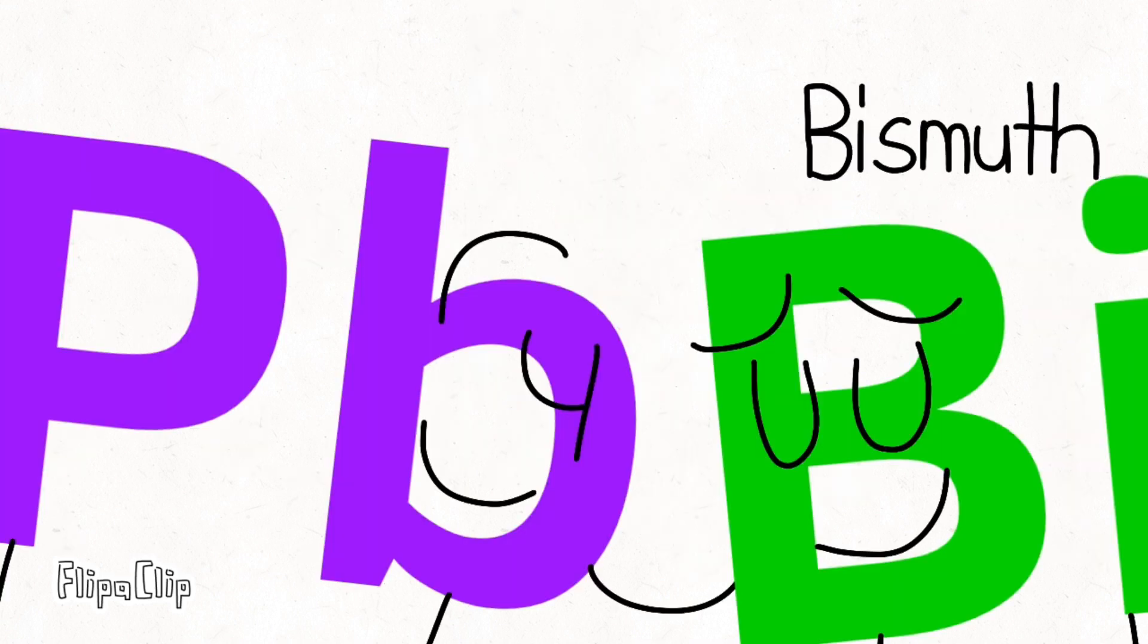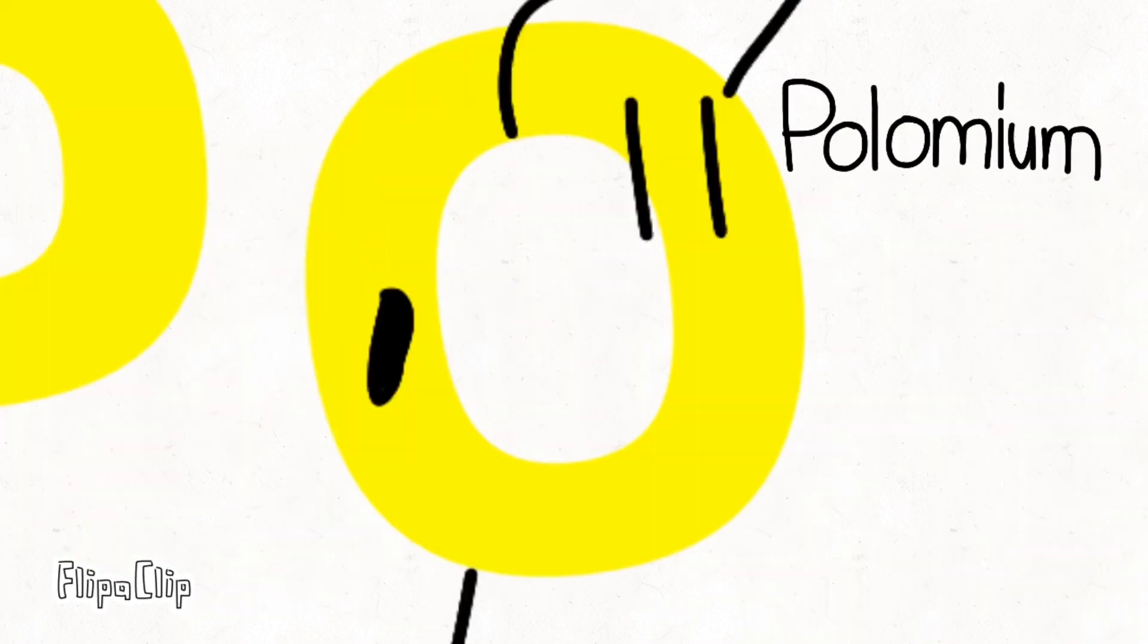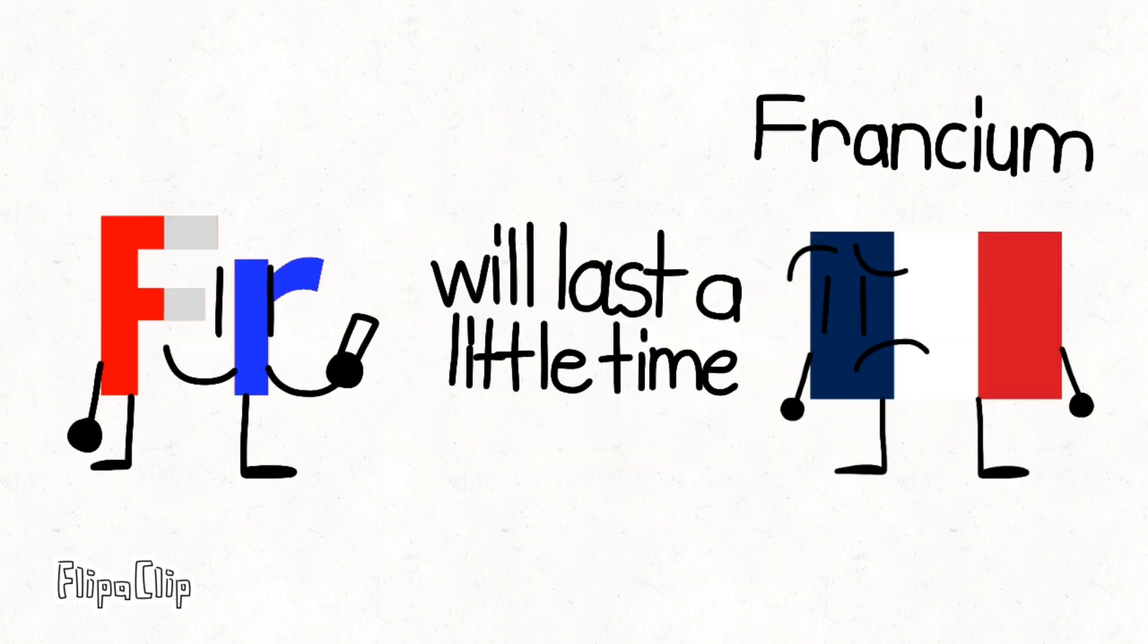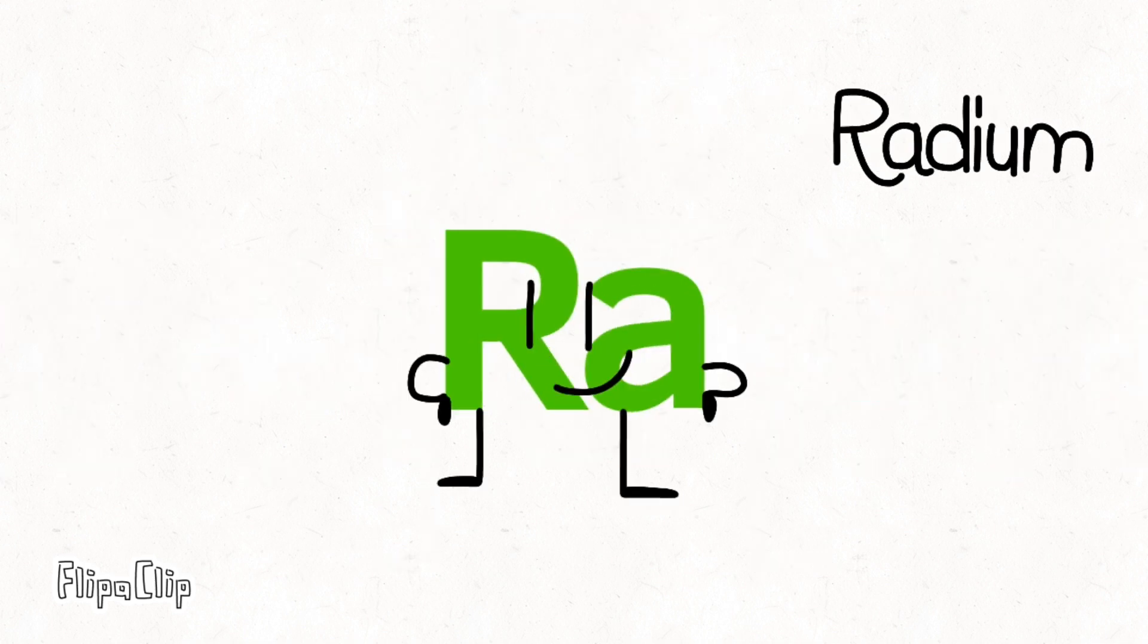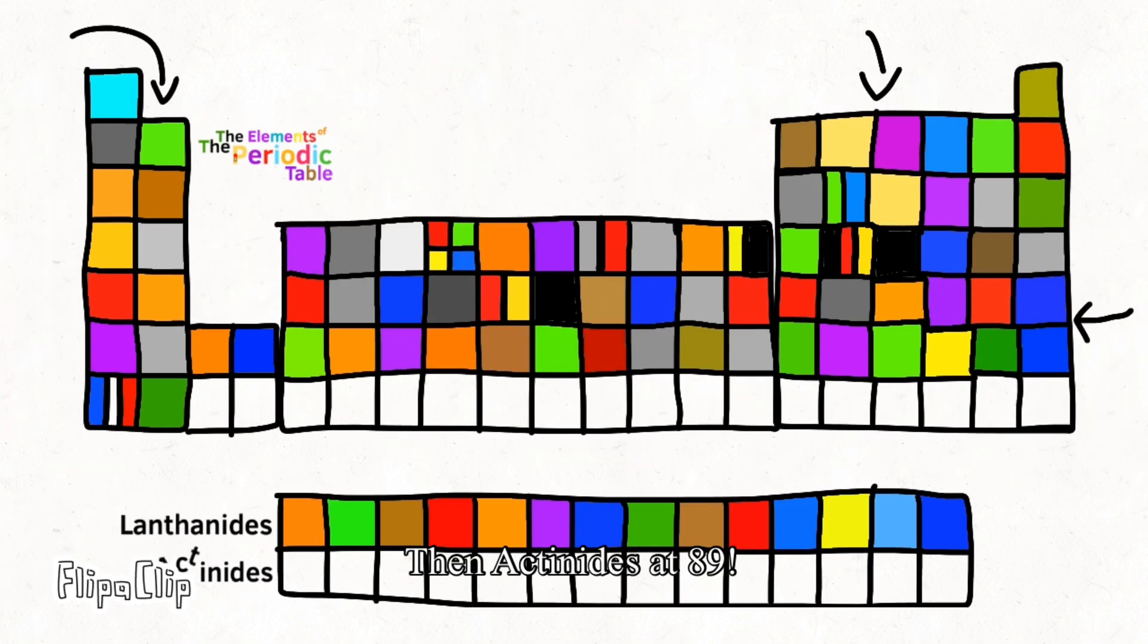Thallium, and lead then bismuth for your tummy. Polonium, astatine would not be yummy. Radon, radium, will last a little time. Francium, then Actinides at 89.